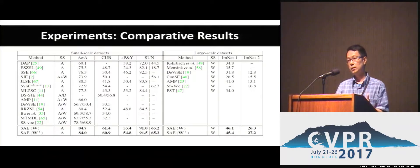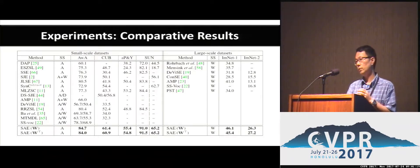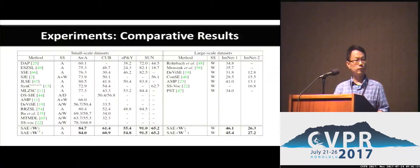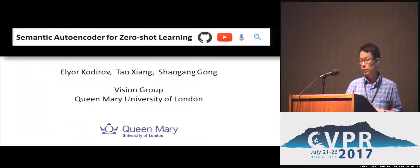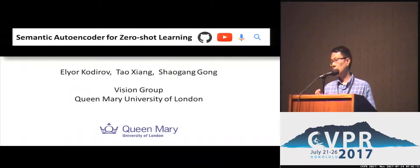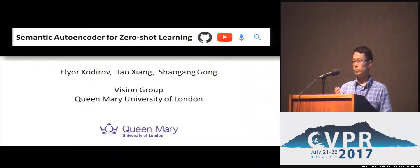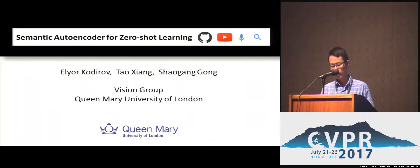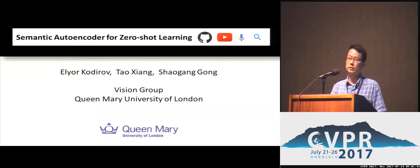This is despite the fact that our model is closed form, is linear, and is very simple — solvable in six lines of MATLAB code. The take-home message is that the key to zero-shot learning is to improve the generalization ability, and the autoencoder, which is a classic model, has the ability to improve the model's generalization ability. That's why we achieve the best results so far on zero-shot learning. Thank you for your attention — please come to our poster number 18 for further discussion.